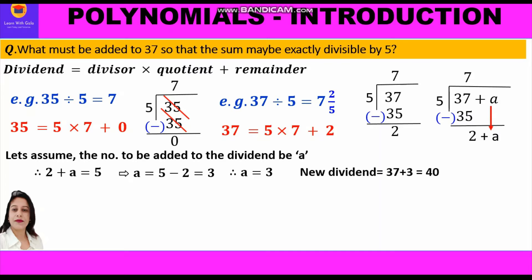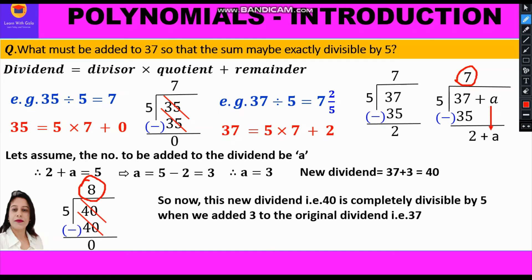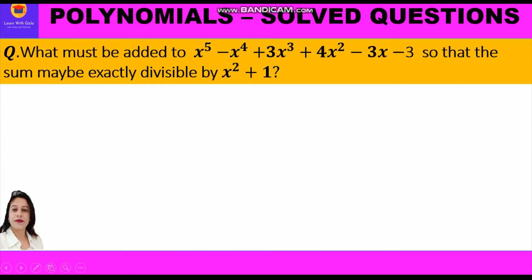So a = 3, which we add to the dividend 37 to get 40, which is exactly divisible by 5. When we divide 40 by 5, we get remainder 0. Note that the quotient changed from 7 to 8, since we moved from 35 to the next multiple of 5, which is 40. In the same way, we shall now solve the polynomial question.